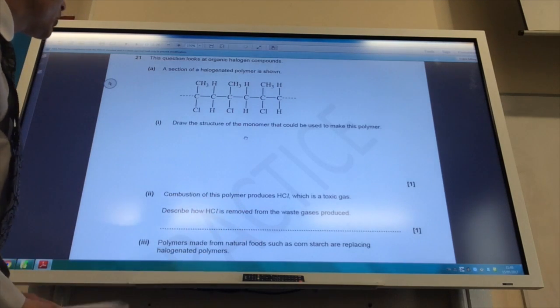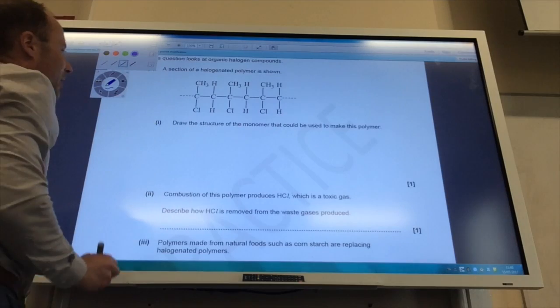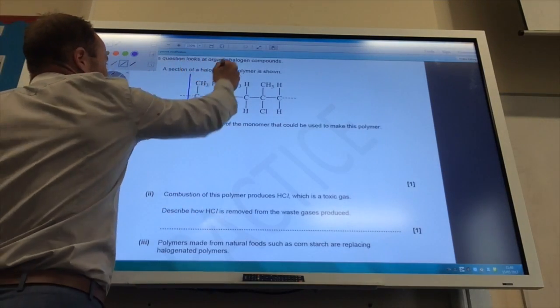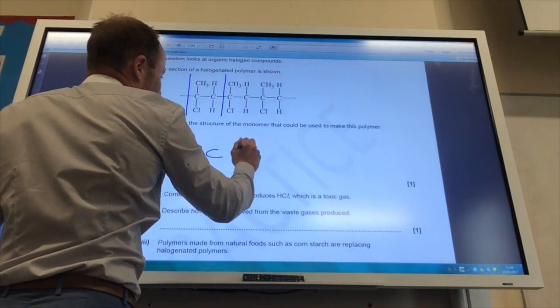Right, so we're moving on to question 21 now. We have got a polymer to start with and it wants me to draw the structure of the monomer. So hopefully you can see that is my repeating unit.